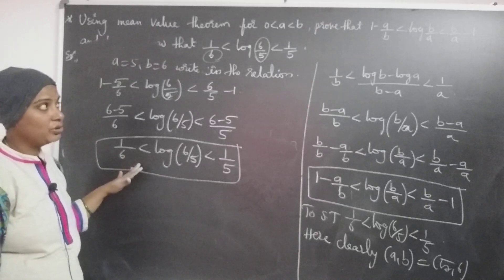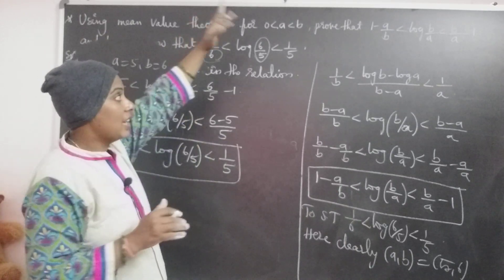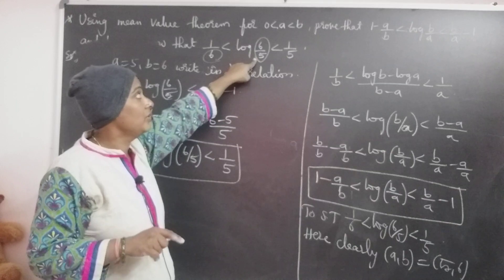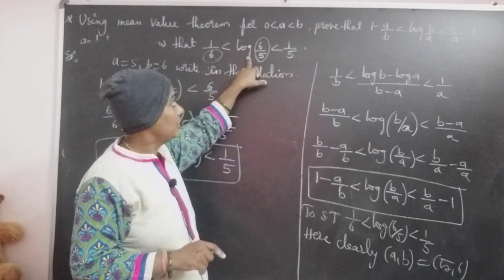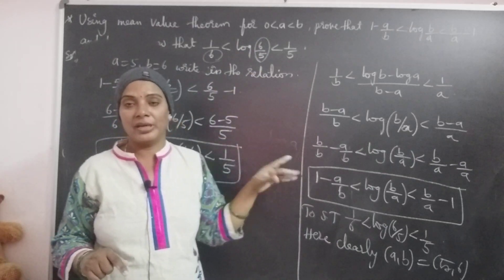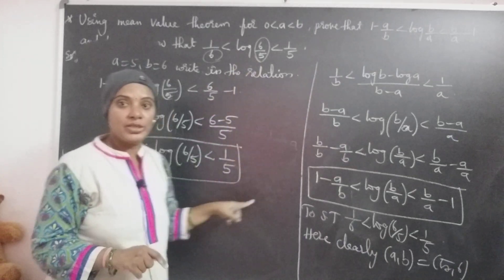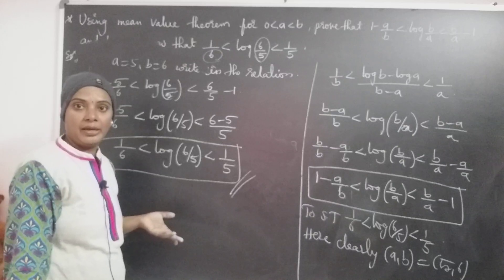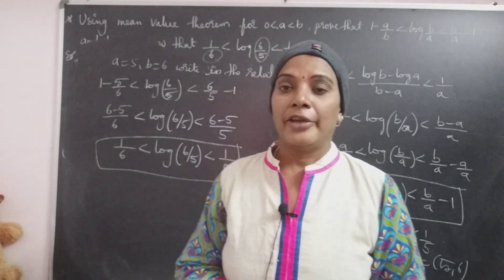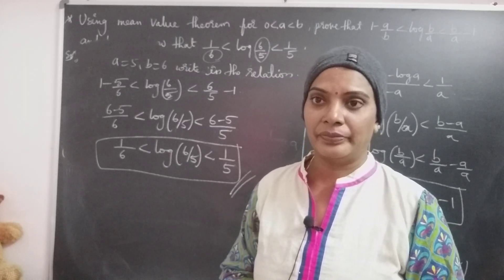The approach: first identify the function, then determine the interval in which it is defined. If they give specific values like a and b, compare with the relation to identify the A and B values and substitute in the above relation to get the result easily. This is a 10-marks question, very easy to solve. If you like this video, please subscribe to my channel, share with your friends, and I am taking online classes also — contact me if needed. Thank you.